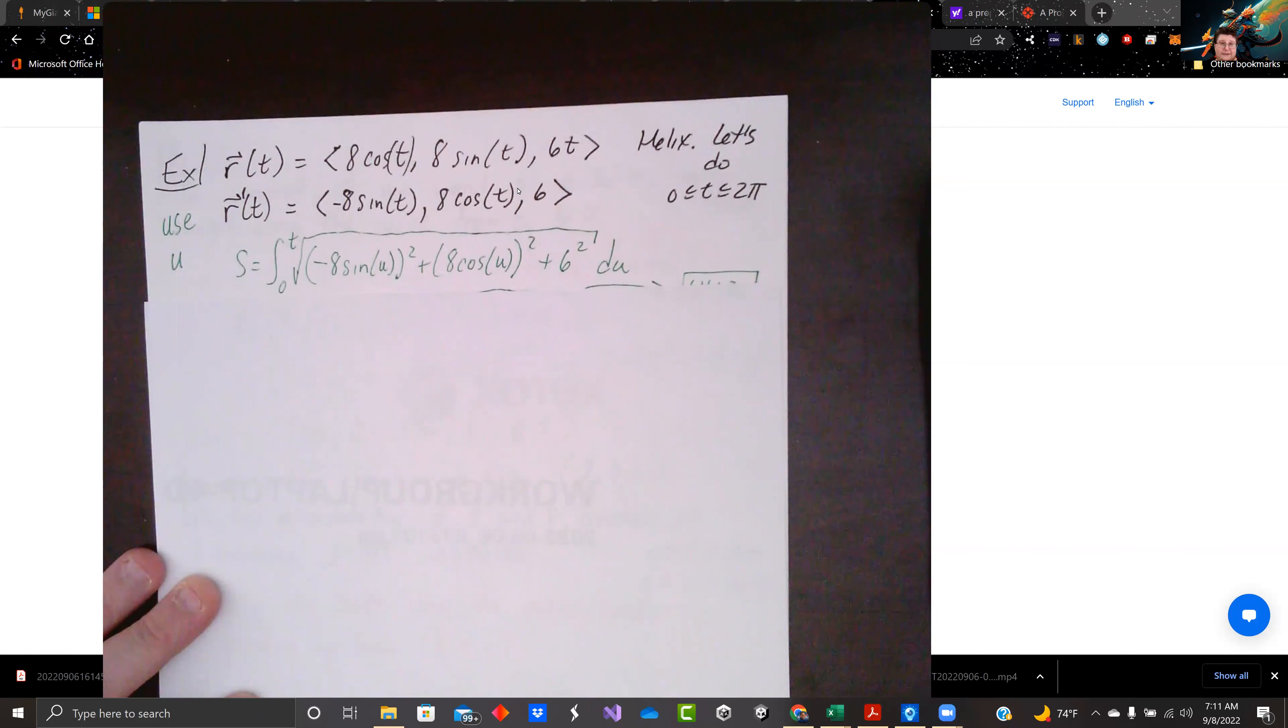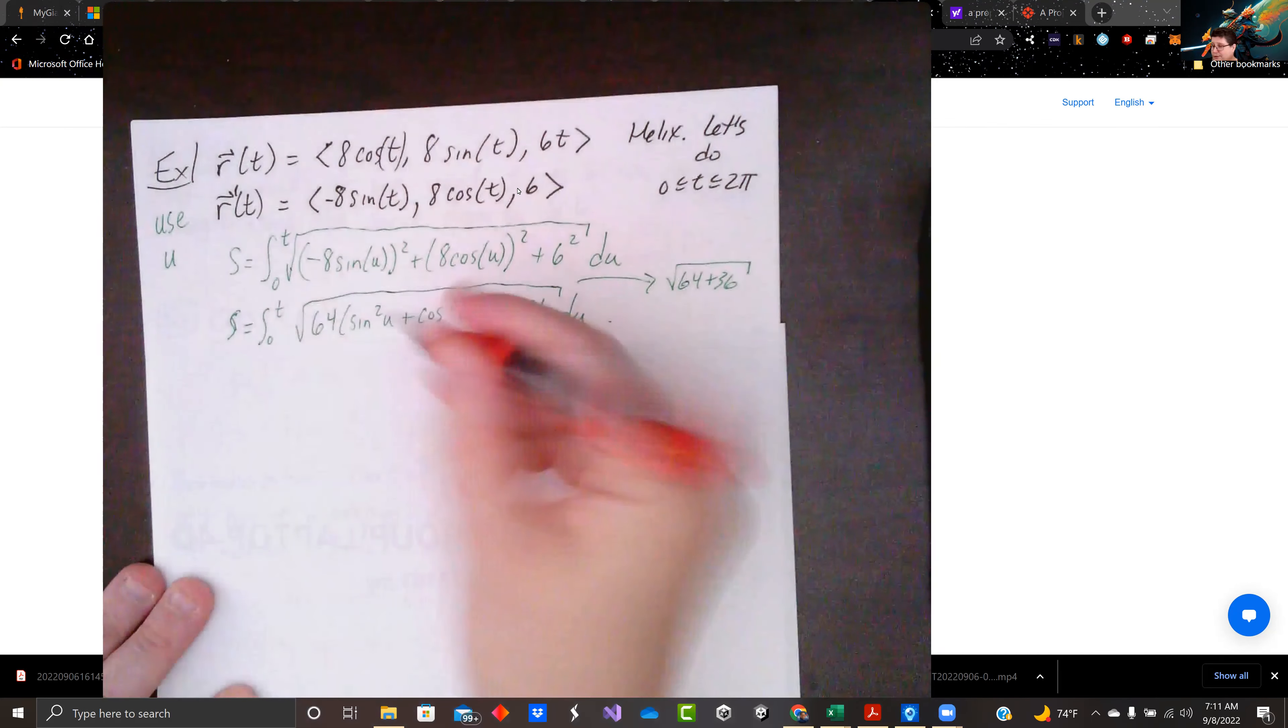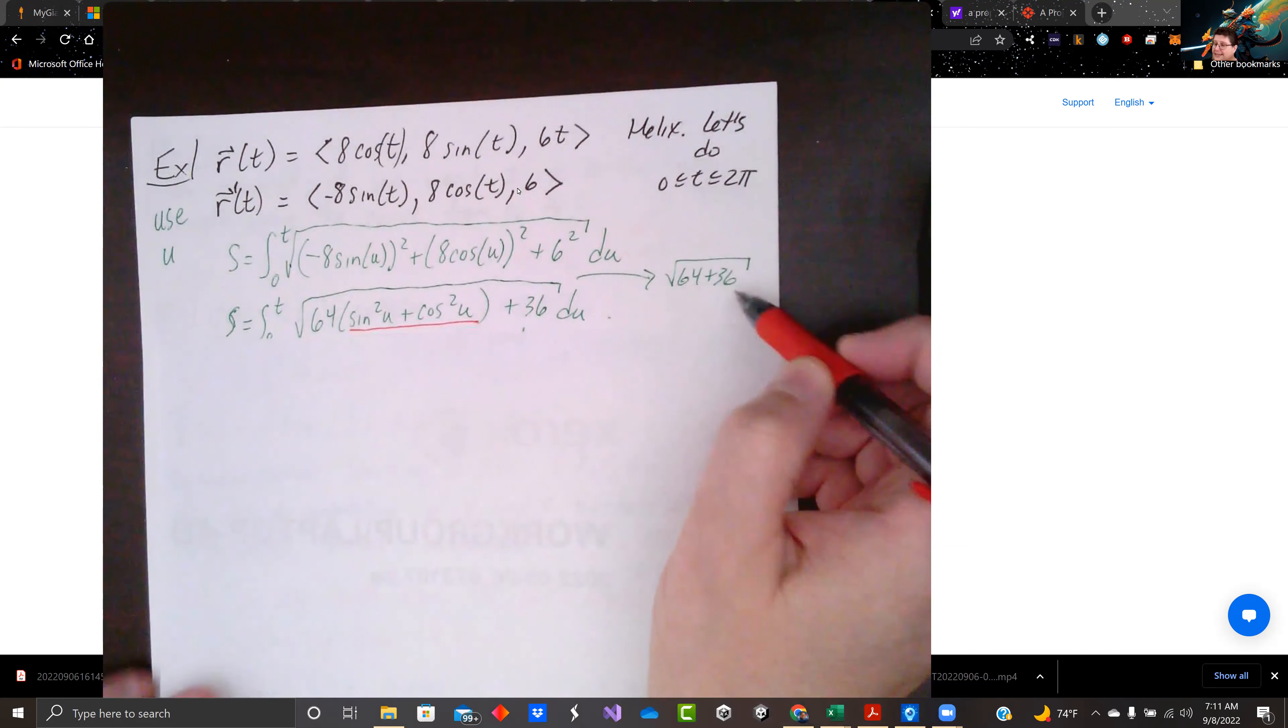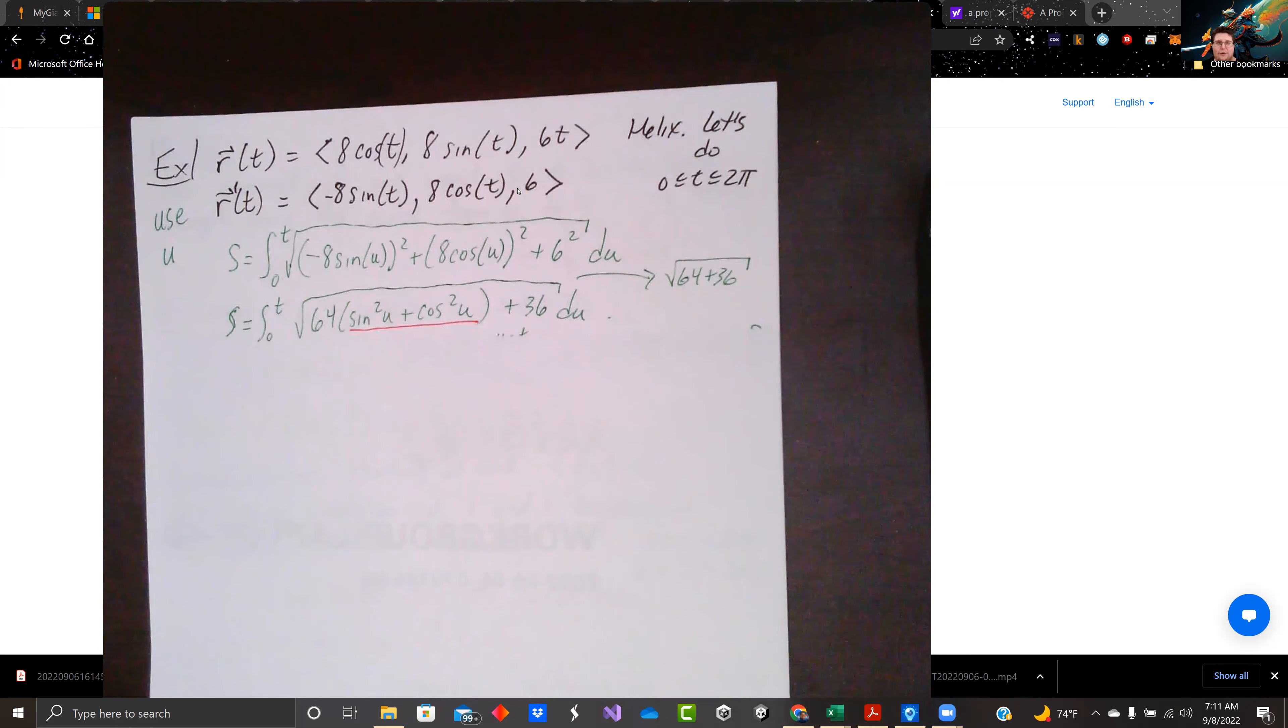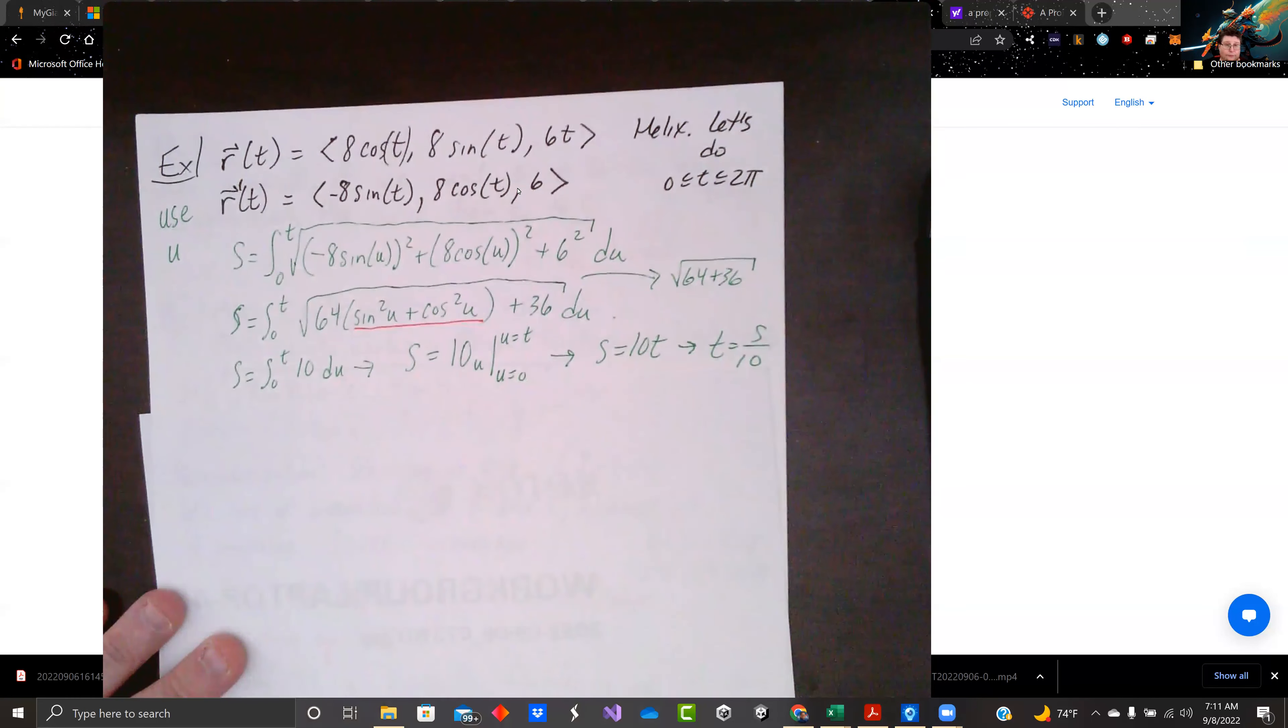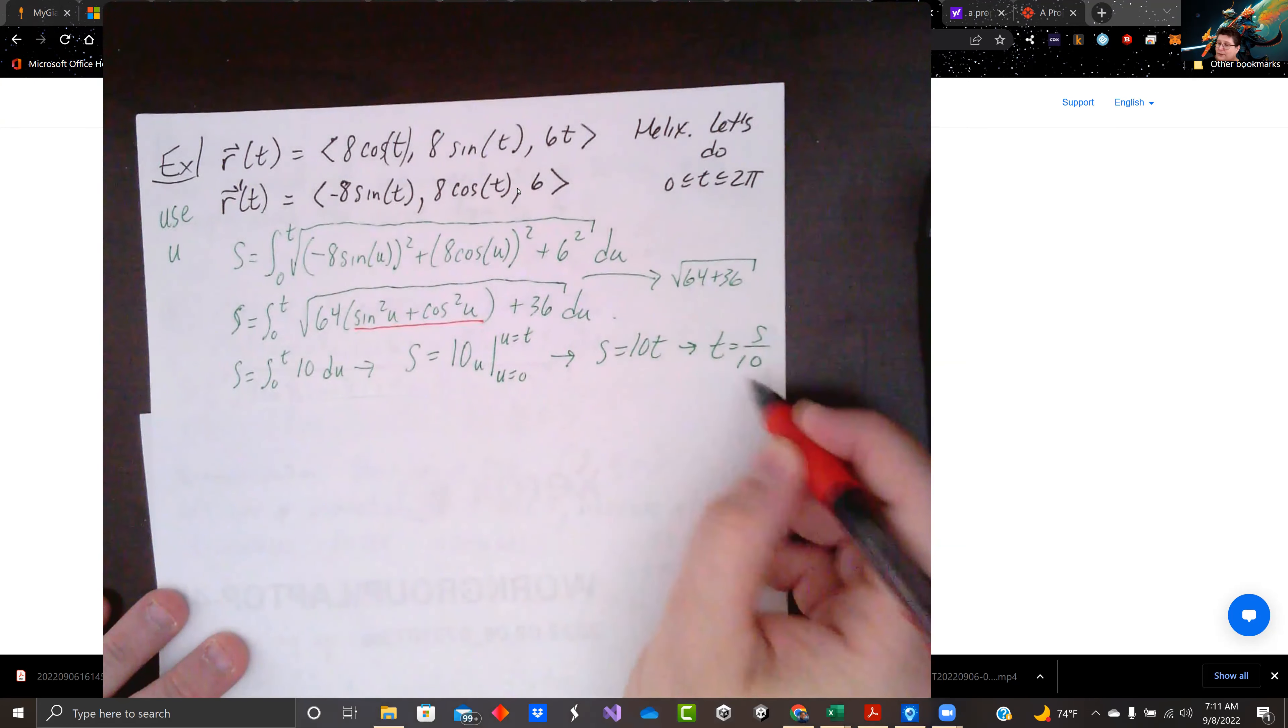And I'm just squaring each of those things for our arc length formula. Negative 8 sine u squared is 64 sine squared u. 8 cosine u squared is 64 cosine squared u. And we can factor out the 64. And then the 6 squared is 36. Using our trig identities, sine squared u plus cosine squared u equals 1. We're left with square root of 64 plus 36, which is the square root of 100, which is 10. So s equals integral 0 to t of 10 du. We integrate. We have 10u. We're evaluating from u equals 0 to u equals t. So s equals 10t or t equals s over 10.